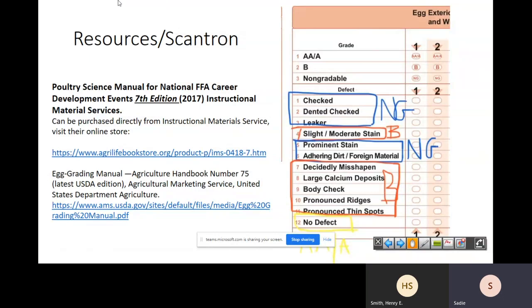I do this for my students so they can see it. I think it makes it just a little easier the first few times that we actually judge exterior eggs. I make them do this first and we go through it. So checked, dented checked, and leaker, I explain those and tell them that it's a no grade and make them highlight it in different colors. That way they can see the difference as they go through and they score ten eggs. Slight to moderate stain is going to be a B. Prominent stain, adhering dirt, foreign materials, no grade. Seven through eleven are all B's and then twelve is no defect, which is going to be a double A or an A. So I like to do this because it gives them a visual on what they're looking for.